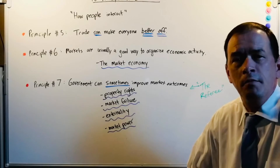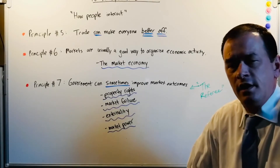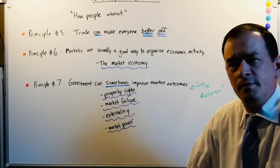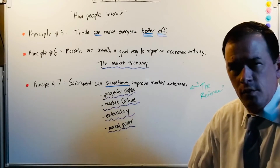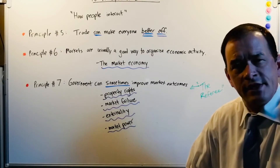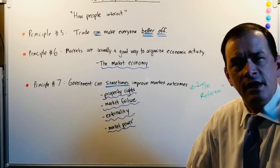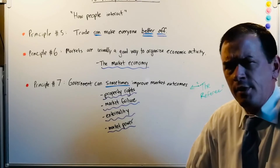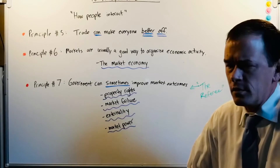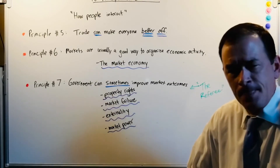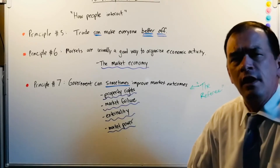Trade can make everyone better off. In chapter three we're going to talk about interdependence and the gains from trade, and it's going to drive this point home. We're more productive when we do what we're best at. Think about the people in Bangladesh — their choices aren't biopharmaceuticals or t-shirts; their choices are making t-shirts in a factory, even if it's for pennies on the dollar. I'm not advocating child labor or woefully underpaid labor, but their choices are working in those factories or starving. What do you think they would prefer?